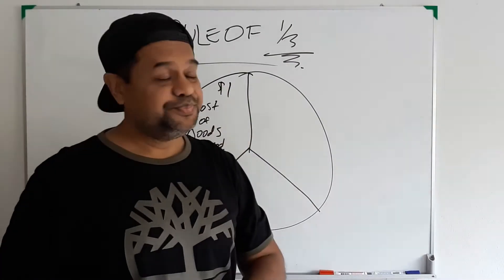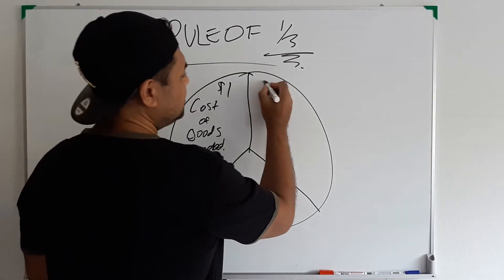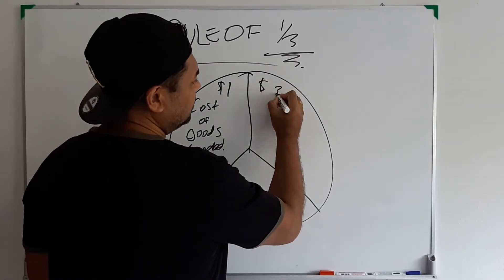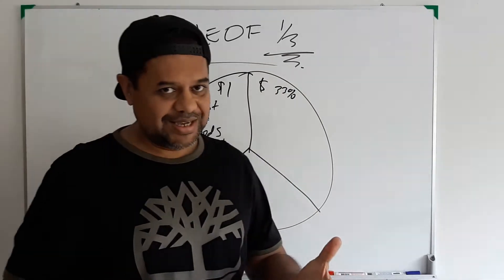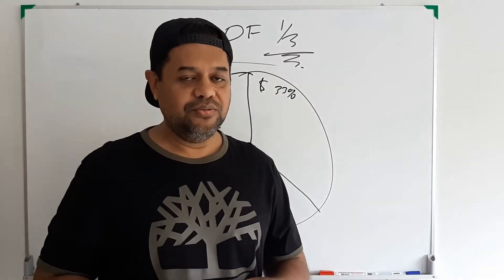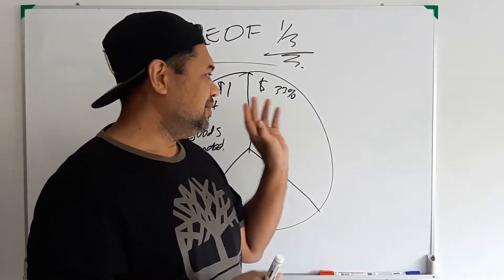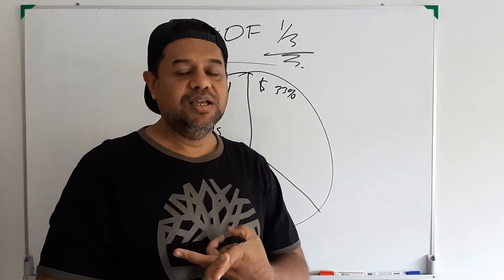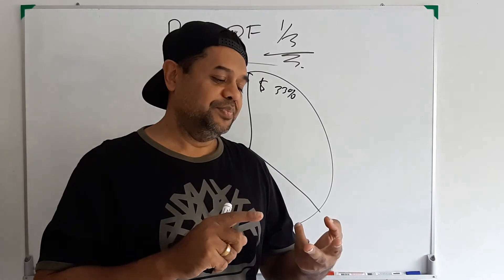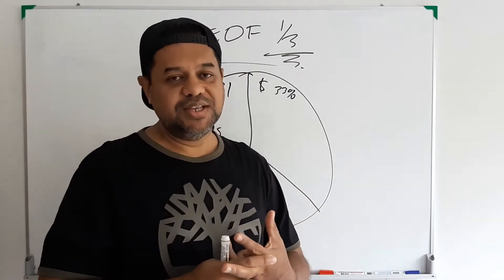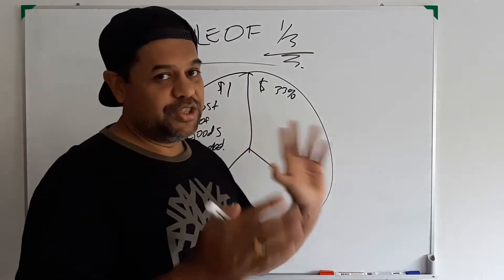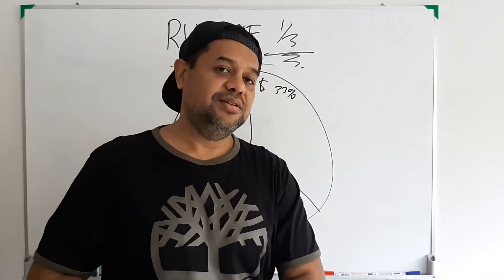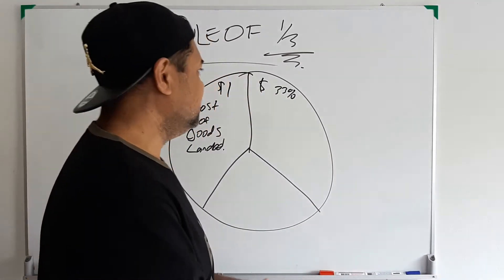Now that we know that it's one dollar to get these goods landed to Amazon, Amazon is basically going to take out 33%. If you've been on Amazon for a while you know that this is approximately, by the time they take their fees and they process the goods and all that sort of stuff, it's about 33% of the price that you sell it for.